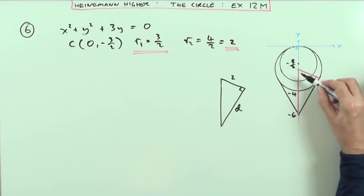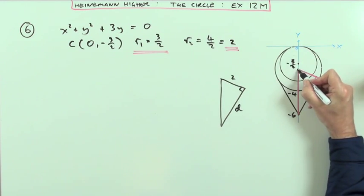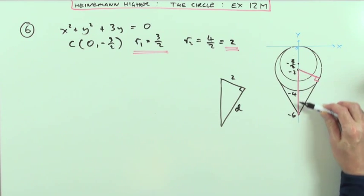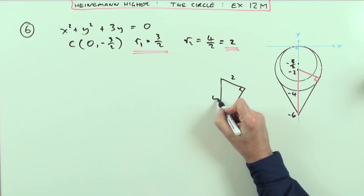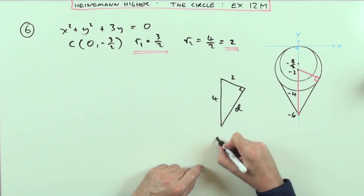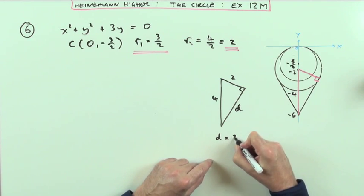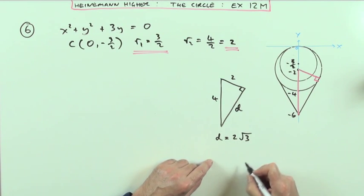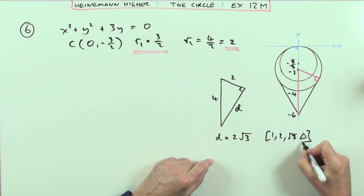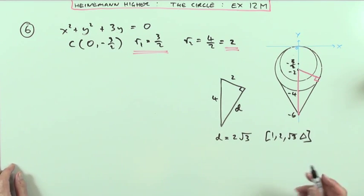Now, this part here must go from the center. If the radius is 2, then that must be at negative 2. So negative 2 to 6 means there's 4 between these, so this part's 4. Well, that just means I've got double a 1, 2, root 3 triangle. So straight away I can say d equals 2 times root 3, because I had a 1, 2, root 3 triangle. Well, you could just do Pythagoras with it, and you get the same result.